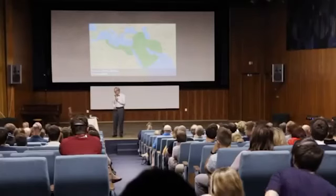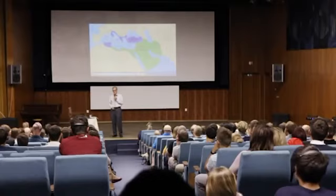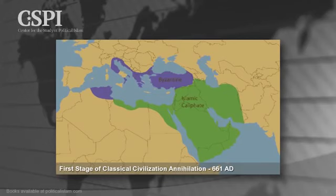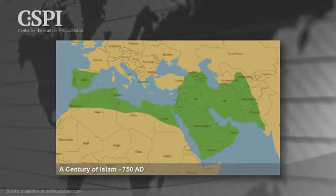On our next slide, we see what I call the first stage of classical annihilation. The Byzantine Empire is shrinking. Islam is pressed into what was called Persia in those days, and there's almost none of the classical civilization left in North Africa. This is basically 100 years — a massive expansion. How did this happen so fast? This is like a collapse.